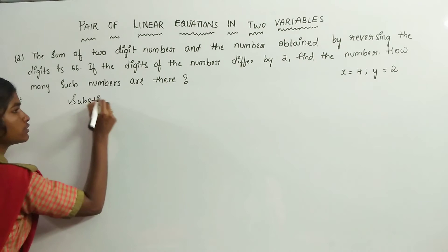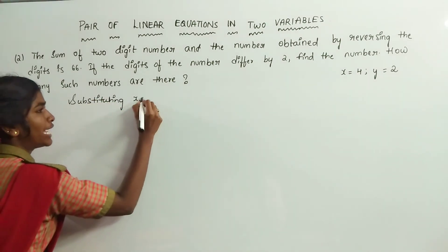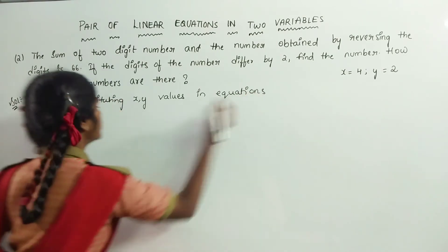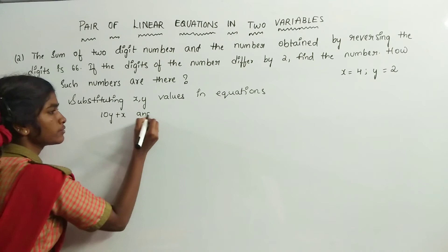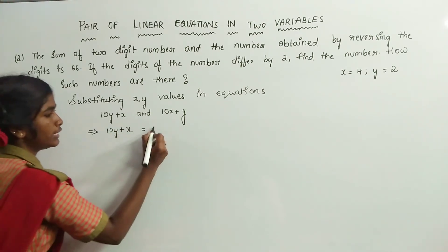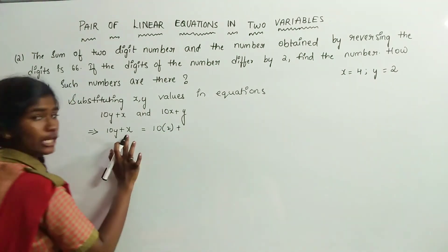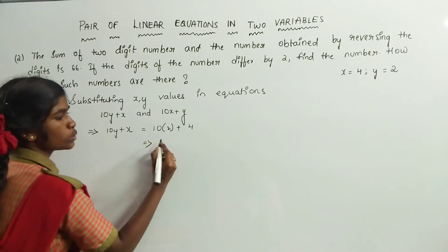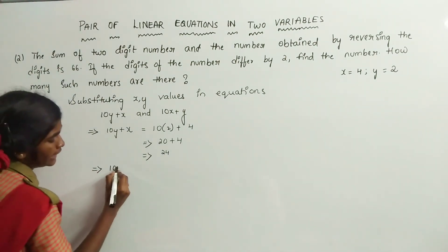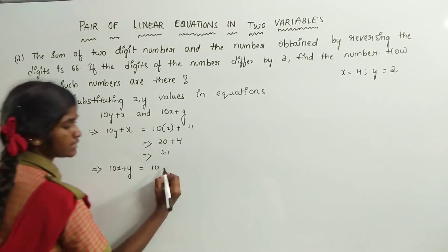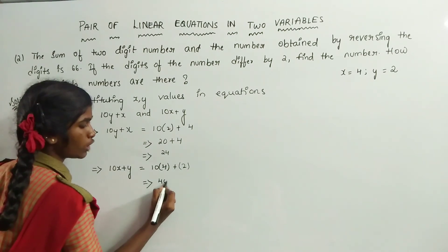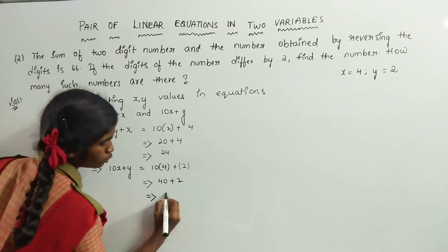Substituting x and y values in the expressions 10y plus x and 10x plus y: 10y plus x equals 10 times 2 plus 4, which equals 20 plus 4, equals 24. And 10x plus y equals 10 times 4 plus 2, which equals 40 plus 2, equals 42.